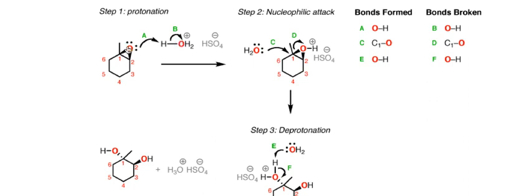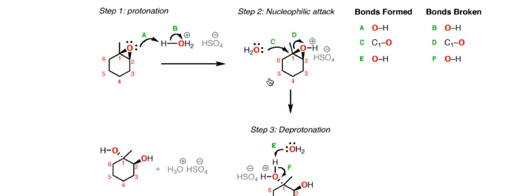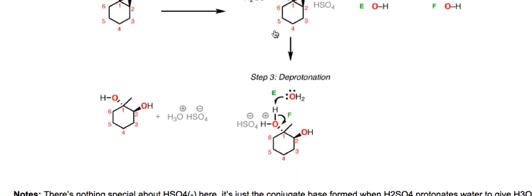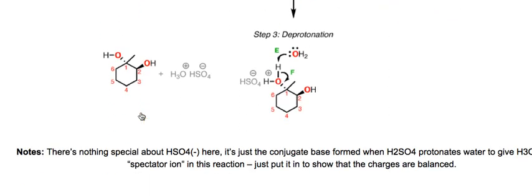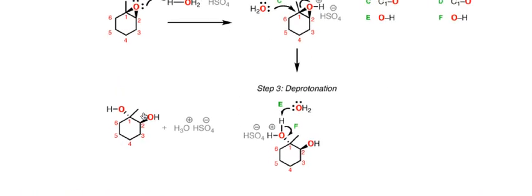In summary, we're protonating the epoxide, we're making it more electrophilic, then we're adding into the epoxide through attack of water, which then leads to inversion of configuration, we're breaking open the epoxide to form an alcohol, and then we're deprotonating the protonated alcohol to give our neutral transdiol. And that is really all there is to it.